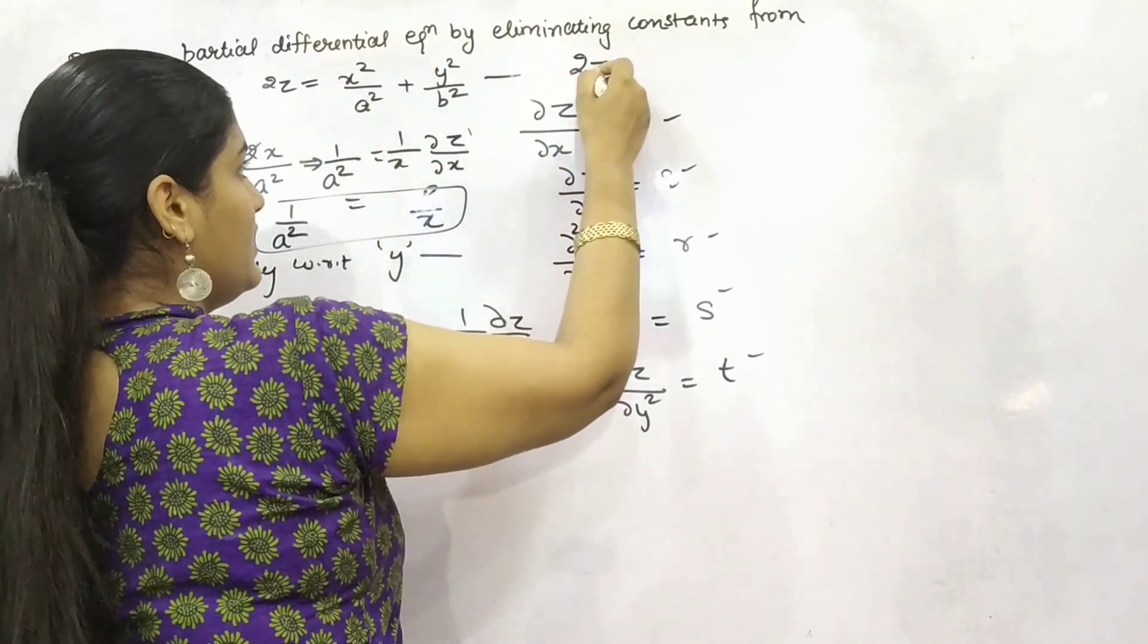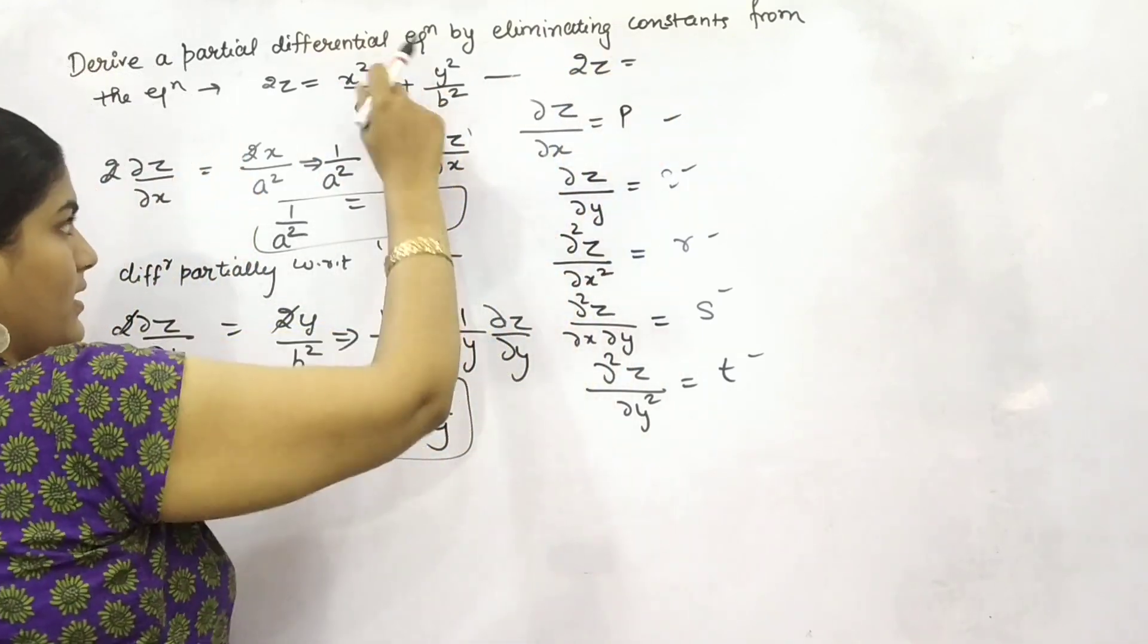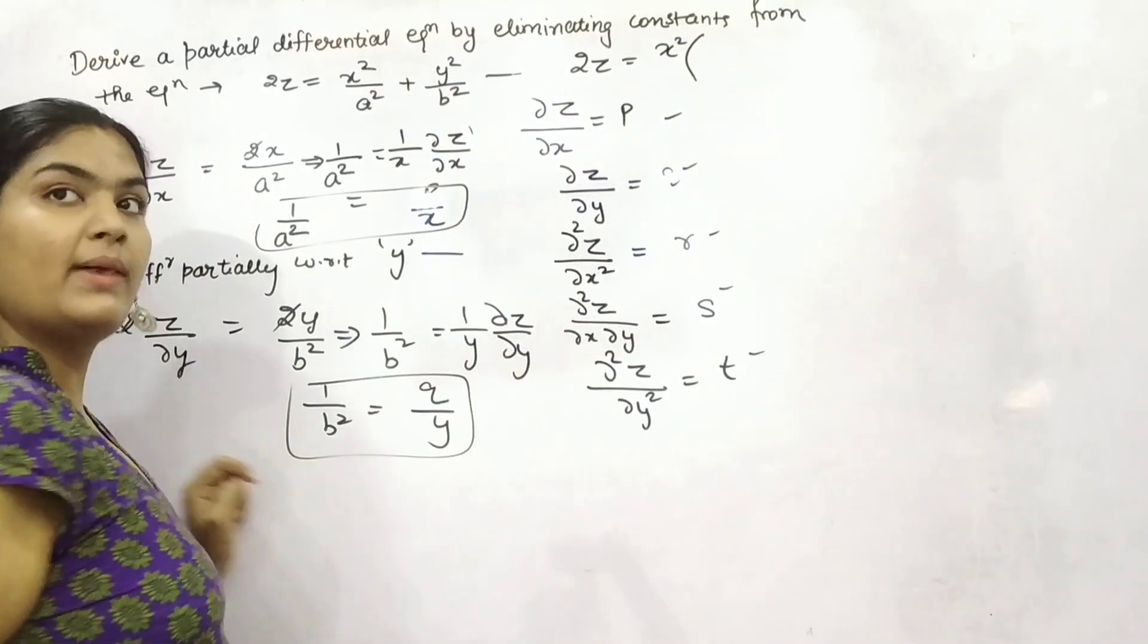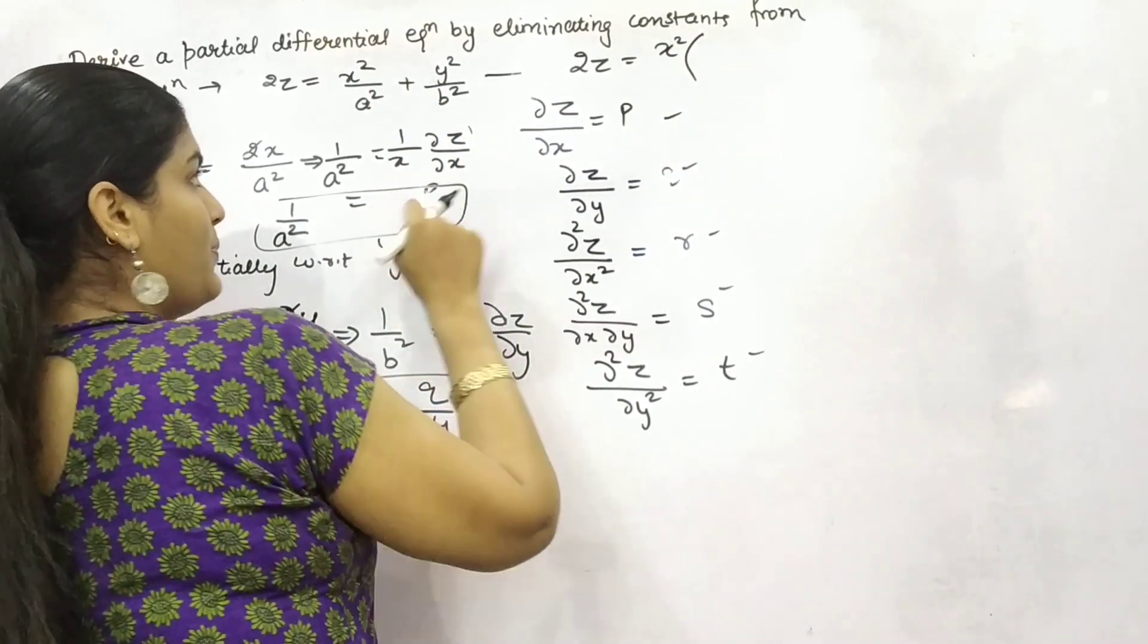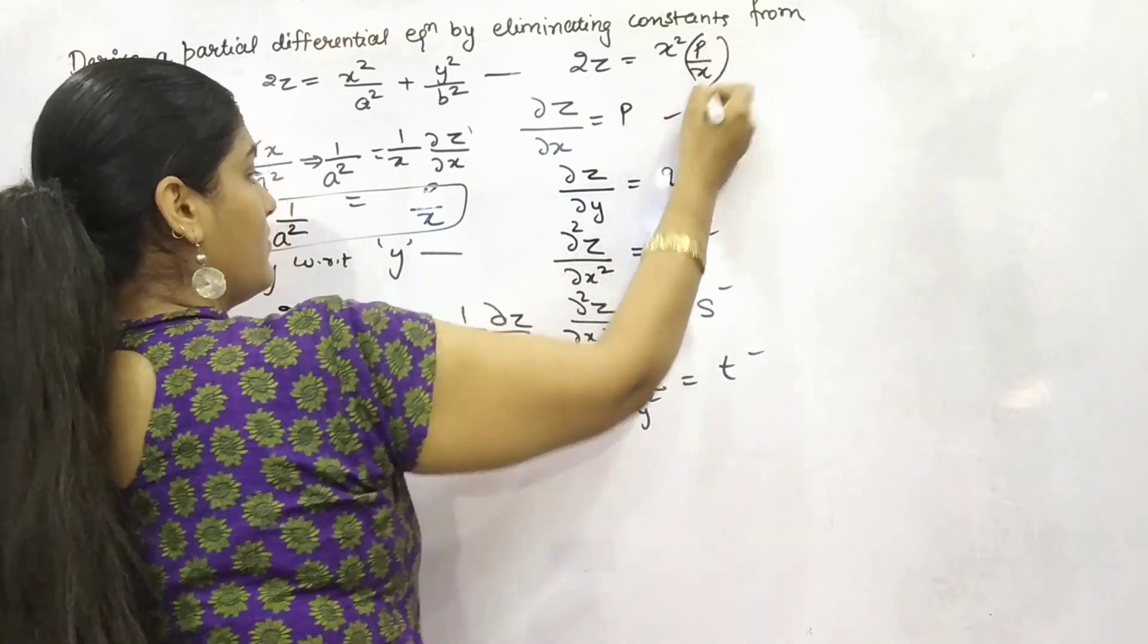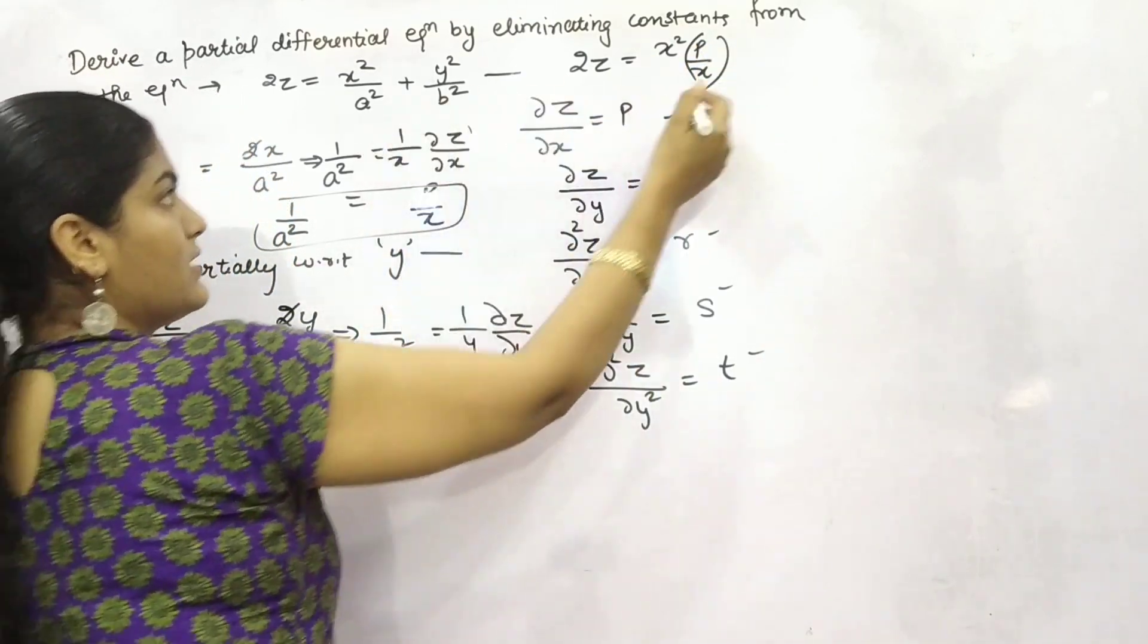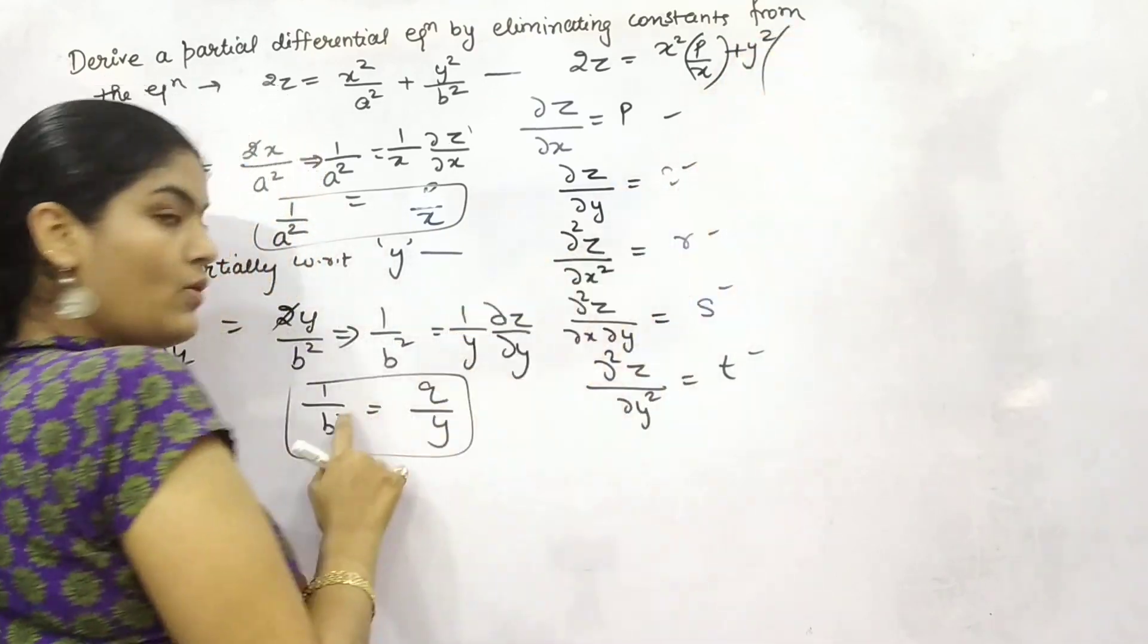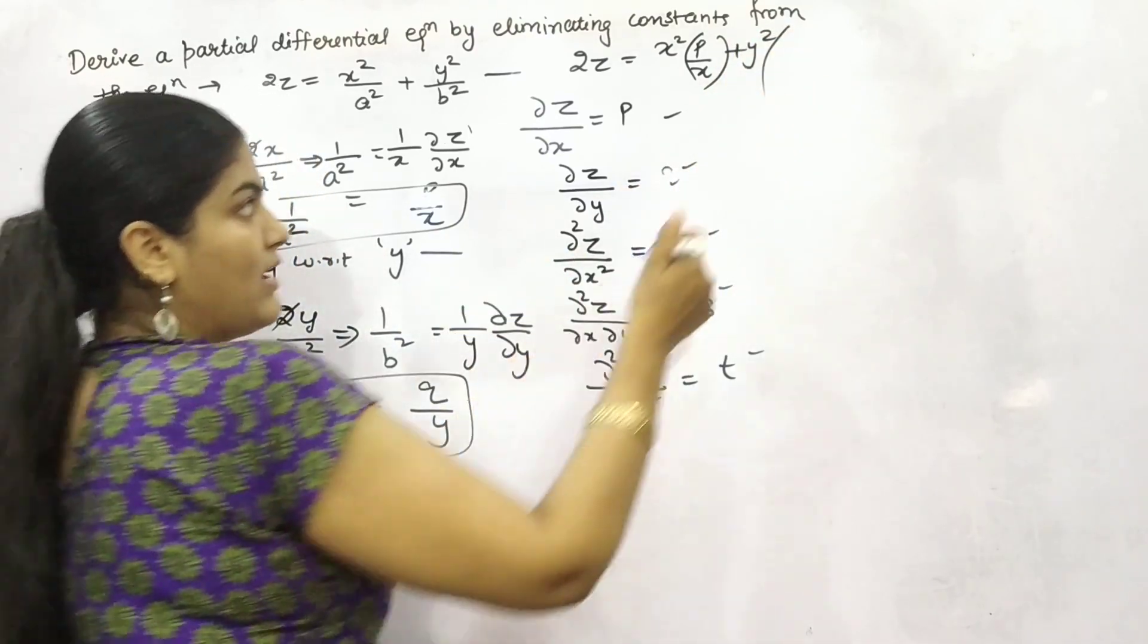You will see, 2z equals x square into 1 by a square. And the value of 1 by a square is p by x. And plus y square, 1 by b square is q by y.